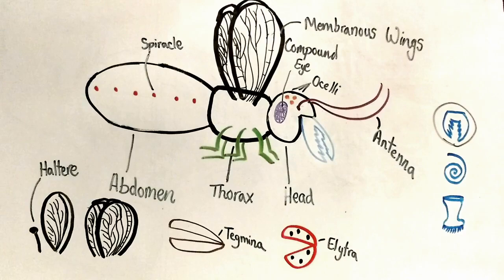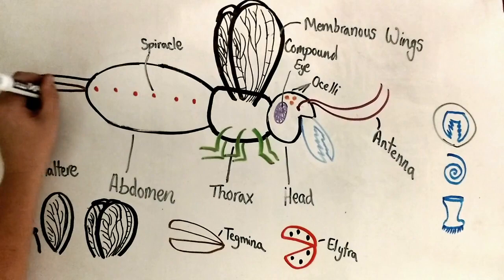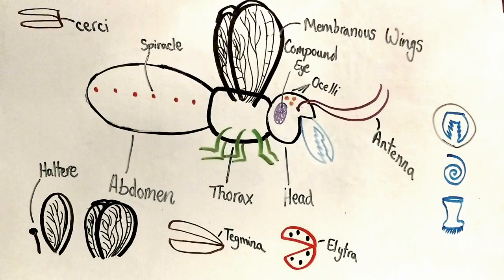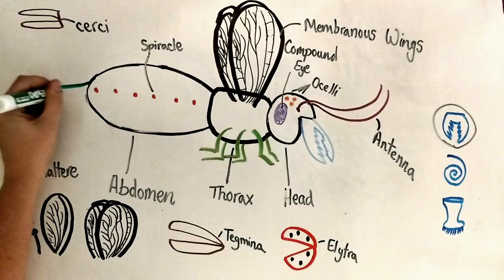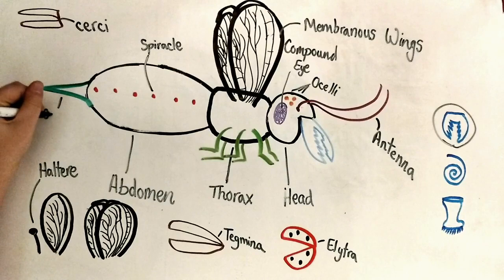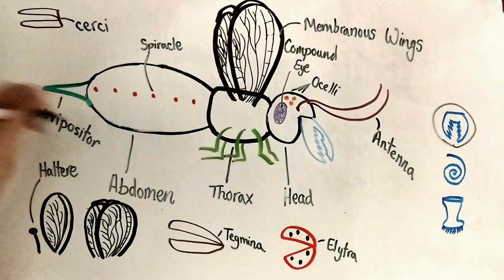These appendages are the insect cerci. They are for predator evasion and detection, and they can appear to be insect antennae to an unsuspecting predator. Female insects will lay eggs out of their abdomen, but sometimes they need a special egg-laying device — for example, if they need to lay their eggs into wood. This egg-laying device is called an ovipositor.